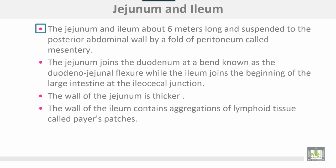The jejunum and the ileum are about 6 meters long and suspended to the posterior abdominal wall by a fold of peritoneum called the mesentery. The jejunum joins the duodenum at the bend known as the duodenojejunal flexure, while the ileum joins the beginning of the large intestine at the ileocecal junction. The wall of the jejunum is thicker than the ileum, and the wall of the ileum contains aggregations of lymphoid tissue called Peyer's patches.